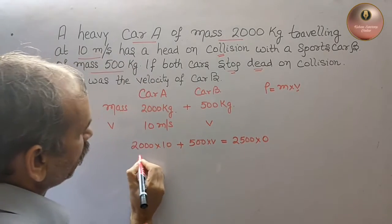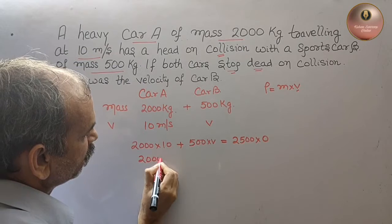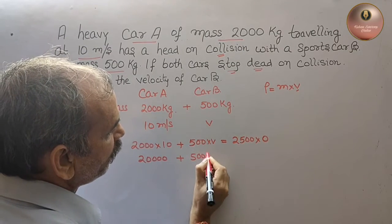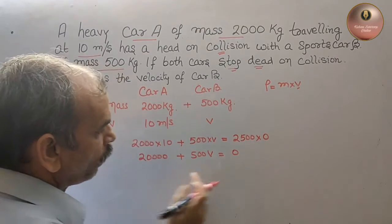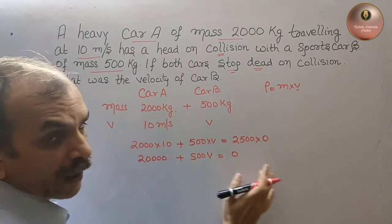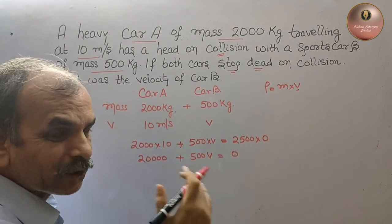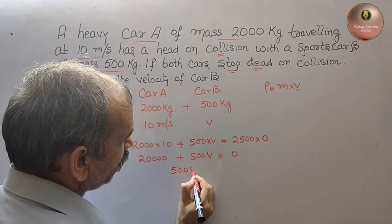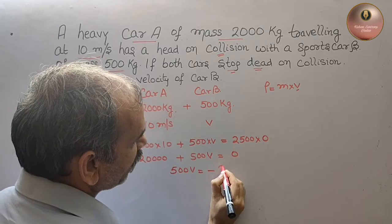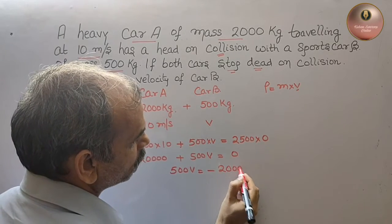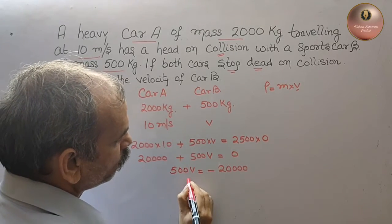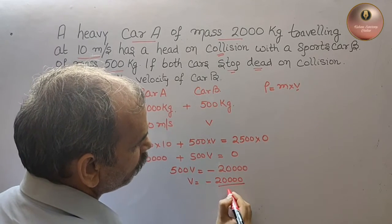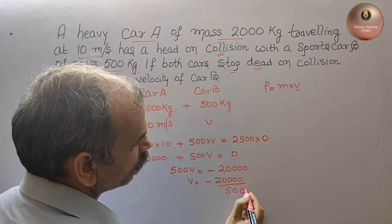So this is 20,000 plus 500V. Taking 20,000 to the right side, it will become minus 20,000. So 500V is equal to minus 20,000. Therefore V is equal to minus 20,000 divided by 500.